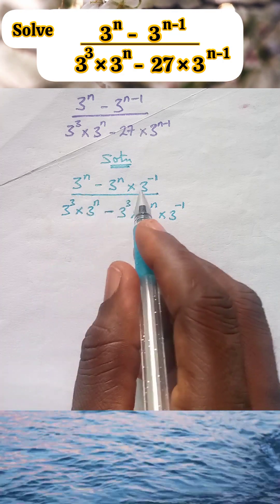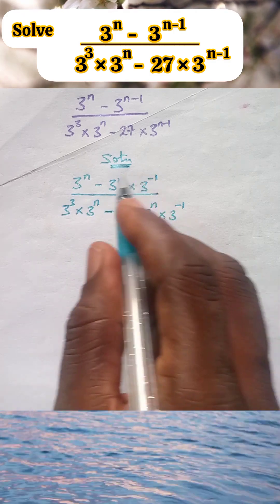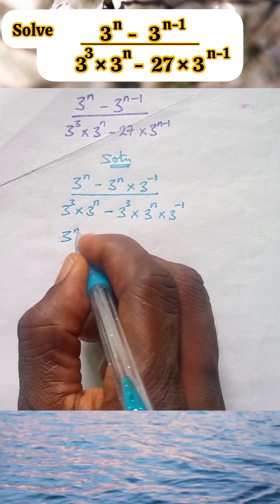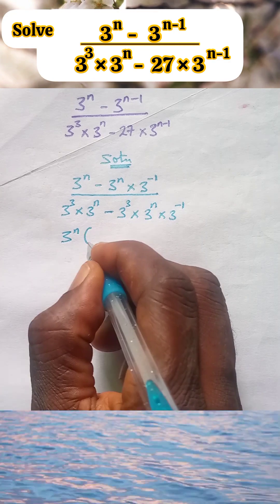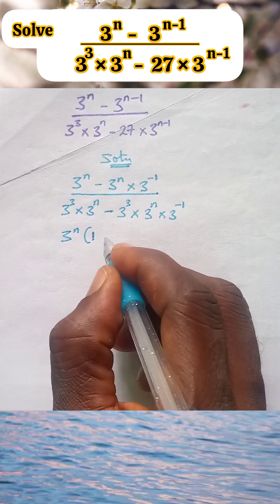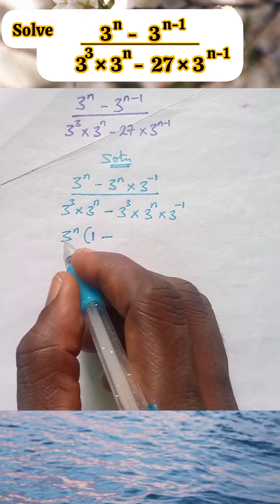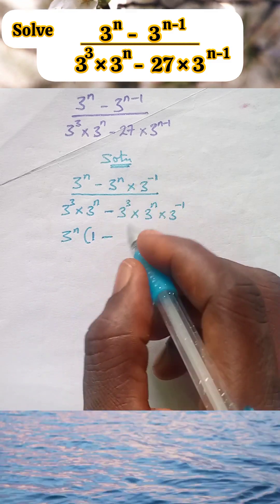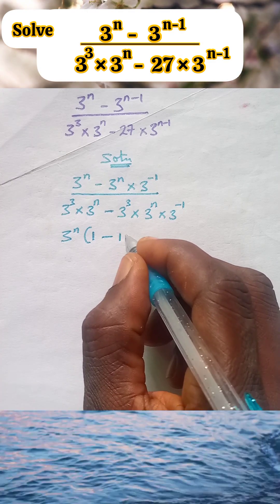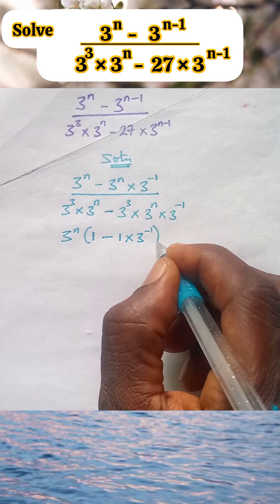Now, 3 raised to the power n is common here and here, so we are going to factorize. Let's bring 3 raised to the power n out in brackets. 3 raised to the power n divided by 3 raised to the power n is 1, minus 3 raised to the power n into this one, which gives us 1 times 3 raised to the power minus 1.